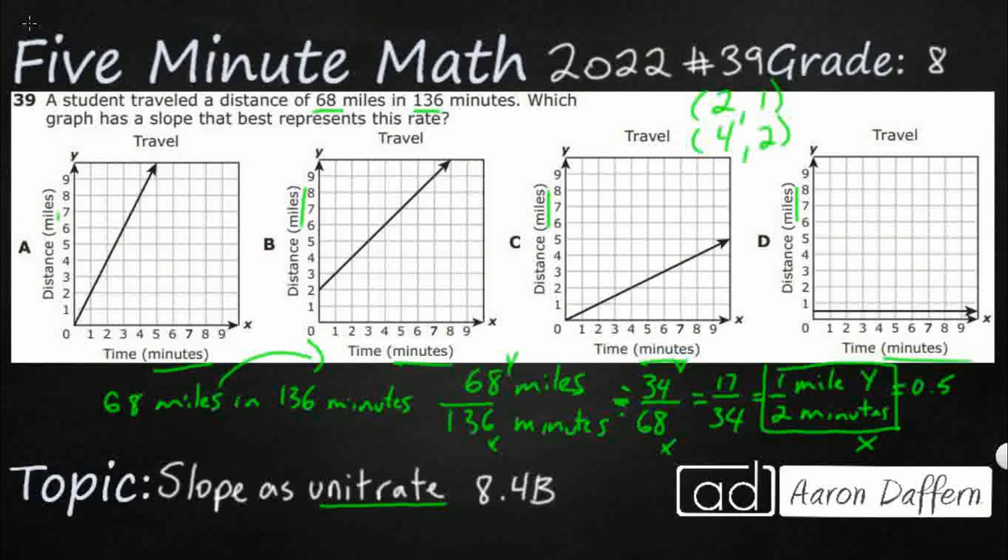It looks like A has got that flipped. We've got one minute for every two miles, but we need two minutes for every one mile. That's why we have to get down to that unit rate. A looks pretty good except for the fact that they actually inverted it. So that is not going to be it.